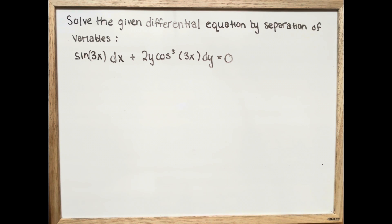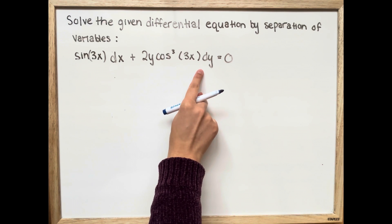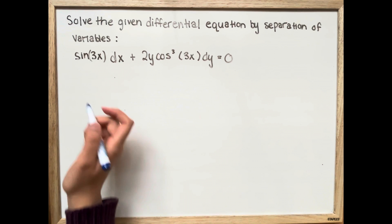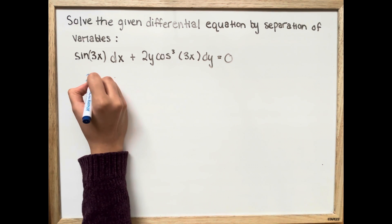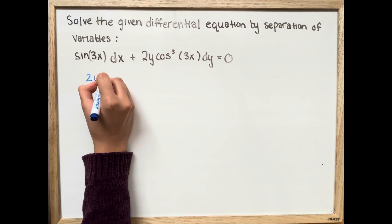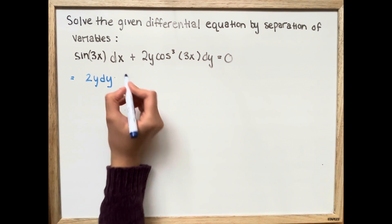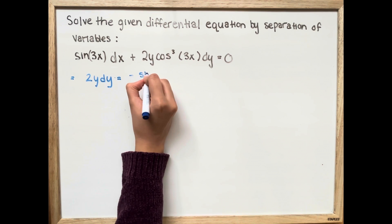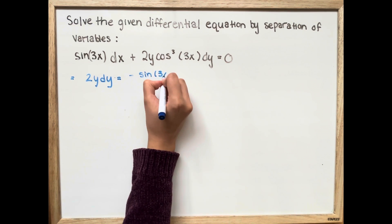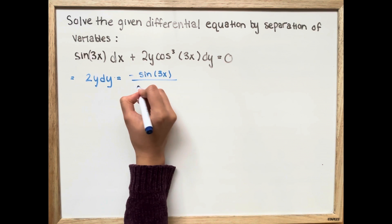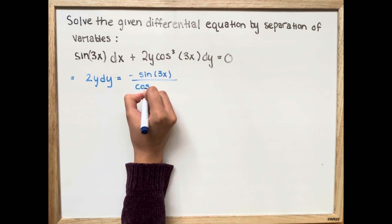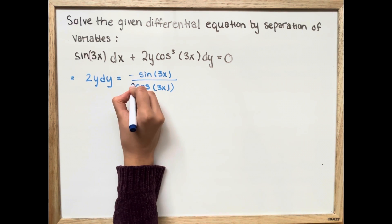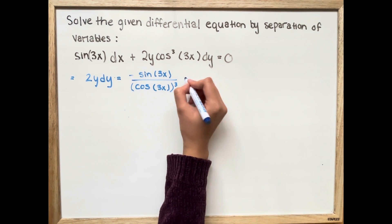The first step is bringing all of the y's to the left side and all of the x's to the right side. So we get 2y dy is equal to negative sine 3x over cosine 3x to the power of 3, dx.